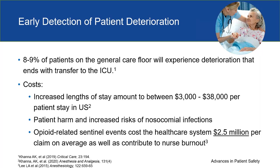Eight to nine percent of patients on the general care floor will experience deterioration that will end with transfer to the ICU, and some of those will result in death. The costs are significant — increased lengths of stay amount to between three thousand and thirty-eight thousand dollars per patient stay in the U.S. Patient harm, increased risks of nosocomial infections, and opioid-induced sentinel events actually cost healthcare systems up to two and a half million per claim on average, and they really contribute to nurse burnout.